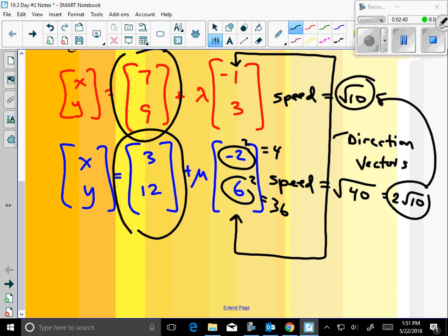Can parallel vectors ever intersect? No, only if they are the exact same vector, right? So that would inquire us to think, well, then this point has to be the same. So parallel vectors cannot intersect unless they're the exact same vector.